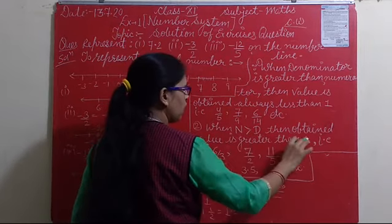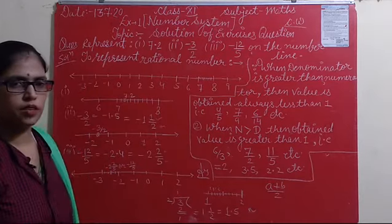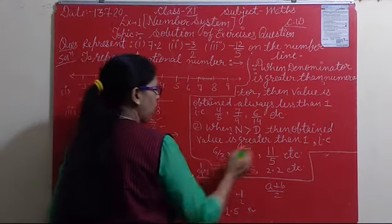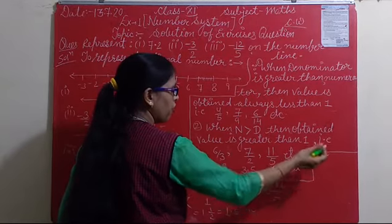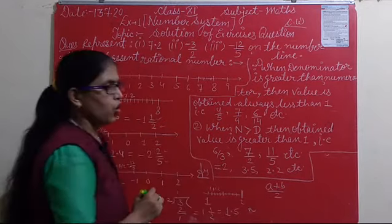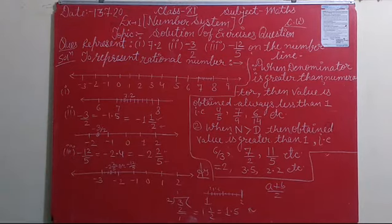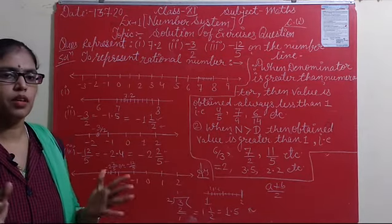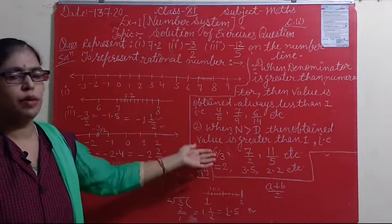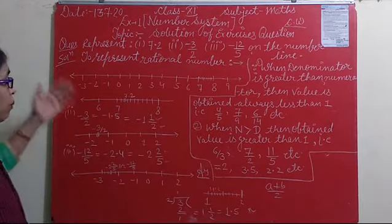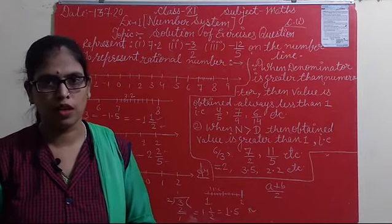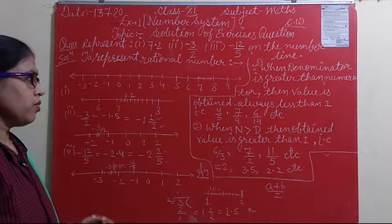Second point: when the numerator is greater than the denominator, the obtained value is always greater than 1. For example: 6 by 3, 7 by 2, 11 by 5, etc. Converting these: 6 by 3 gives 2, 7 by 2 gives 3.5, 11 by 5 gives 2.2. Using these you can determine between which numbers on the number line these values will be represented. These are the things we need to know. I hope this question is now understood — how we represent numbers, fractions, and decimals on the number line.